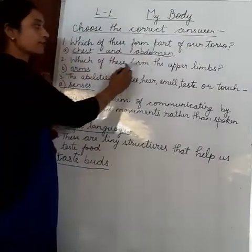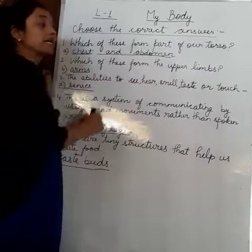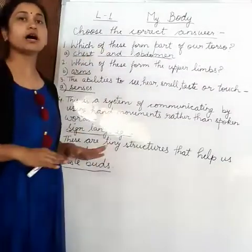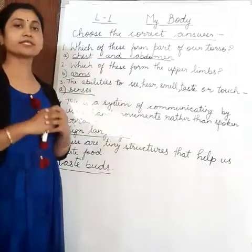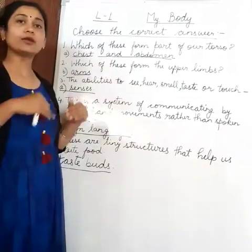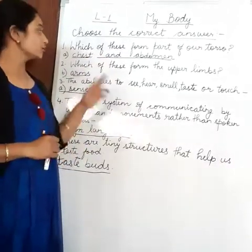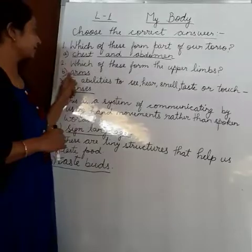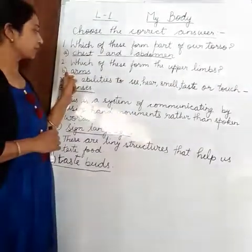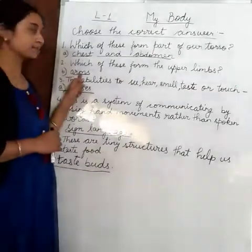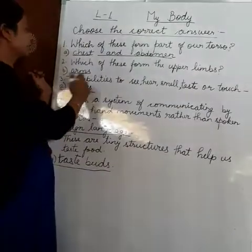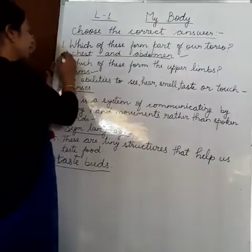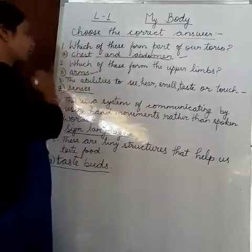Now moving to second one. Which of these form the upper limbs? I have told you upper and lower. Upper is your arms, and lower is your legs. So upper limb, that is option B — arms. Chest and abdomen is your A, and arms is your B.